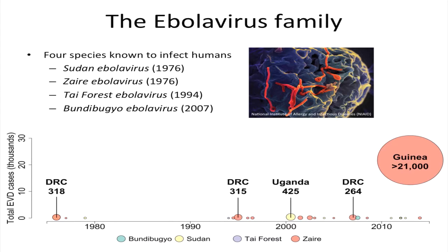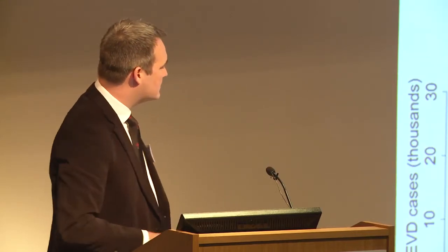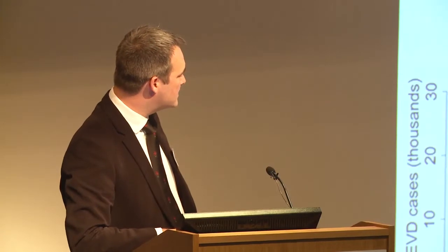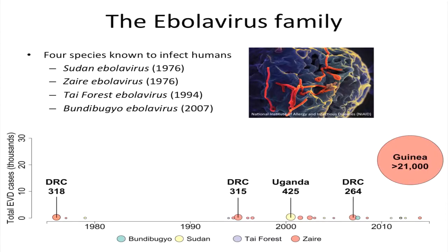We've heard a little bit from David earlier about the Ebola virus family — five species, one of which is not pathogenic to humans and four of which you can see on this graph. The one we're most worried about is Zaire Ebola virus, shown in the pinky color. On the y-axis you have EVD cases in thousands, and the size of the circle represents how big an epidemic we had to contend with.